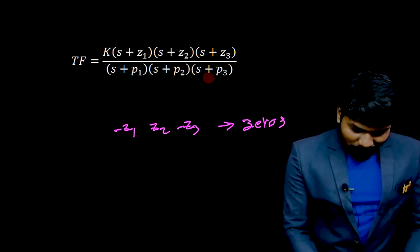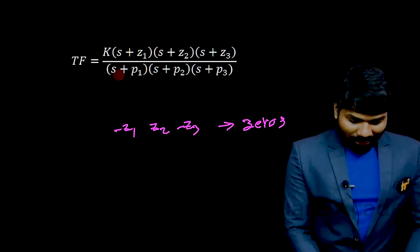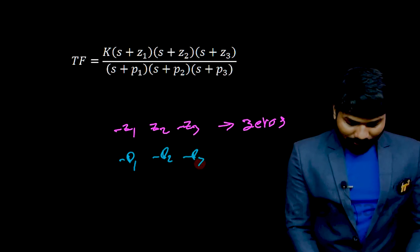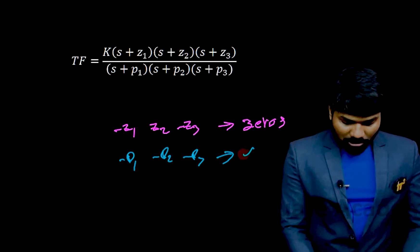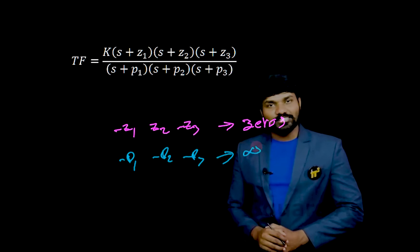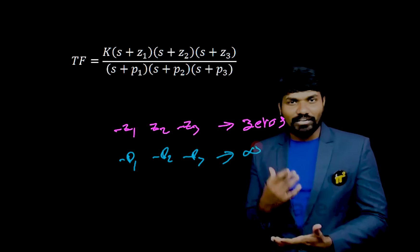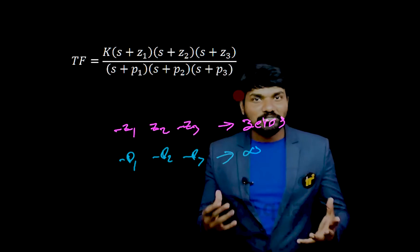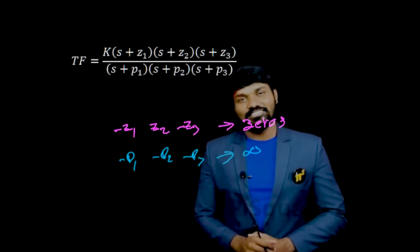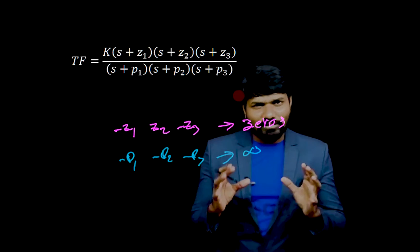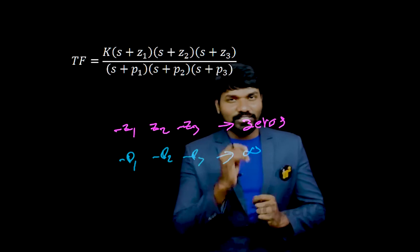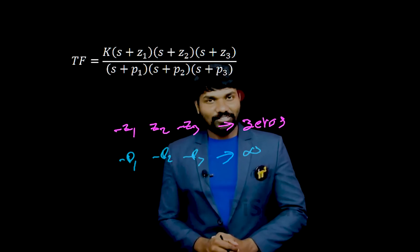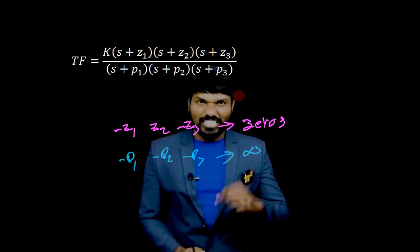Now, why are the denominator roots called poles? When s equals minus p1, minus p2, minus p3, the transfer function becomes infinity. As it is becoming infinity, it should be called 'infinities' — but why are we calling it poles? That's the question. You might think it is a simple question, but see the beauty behind this question and you will feel the essence of control systems.